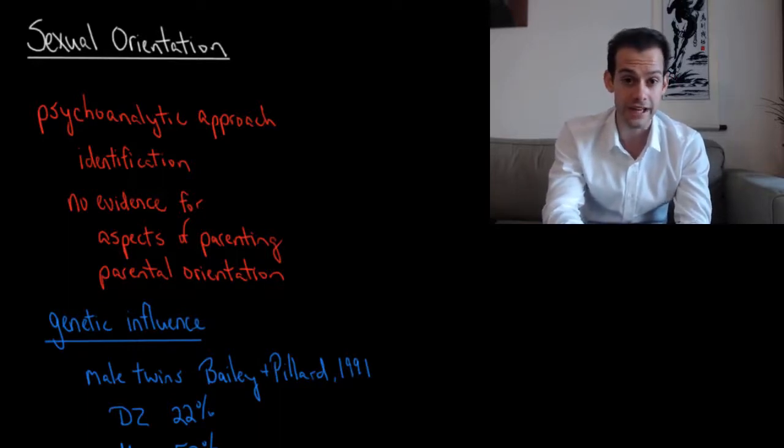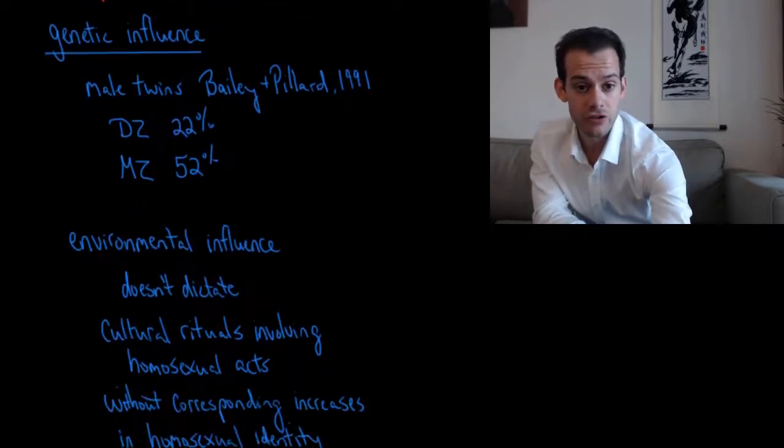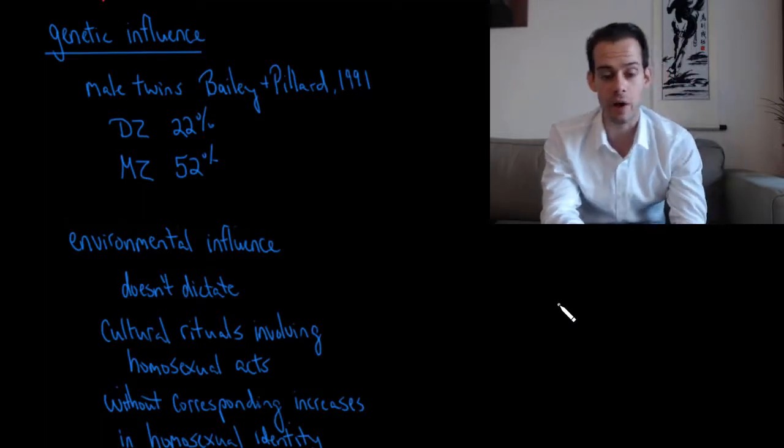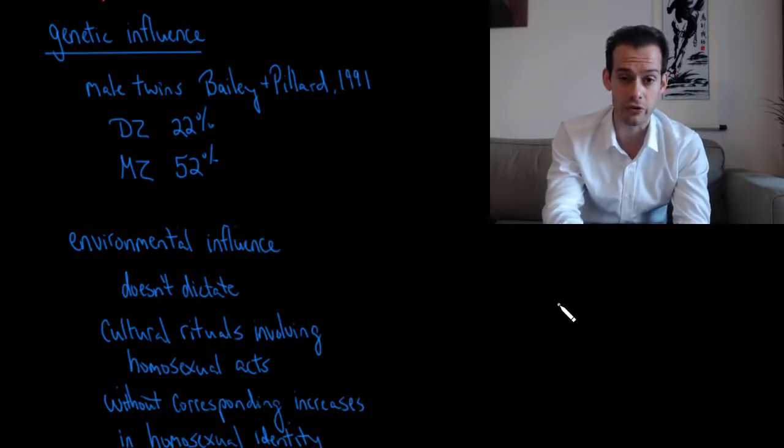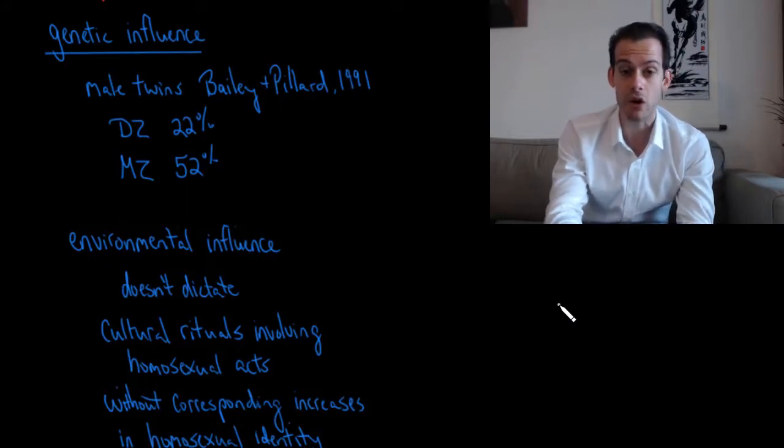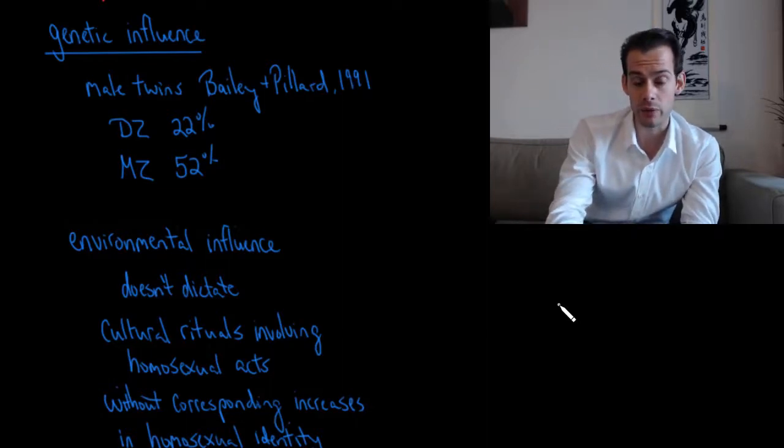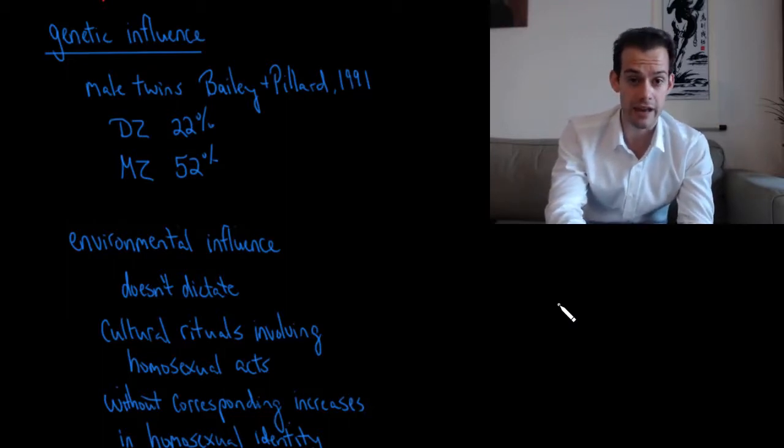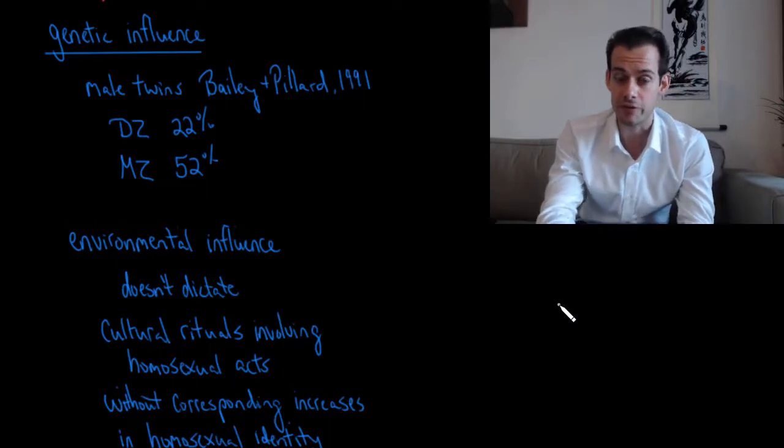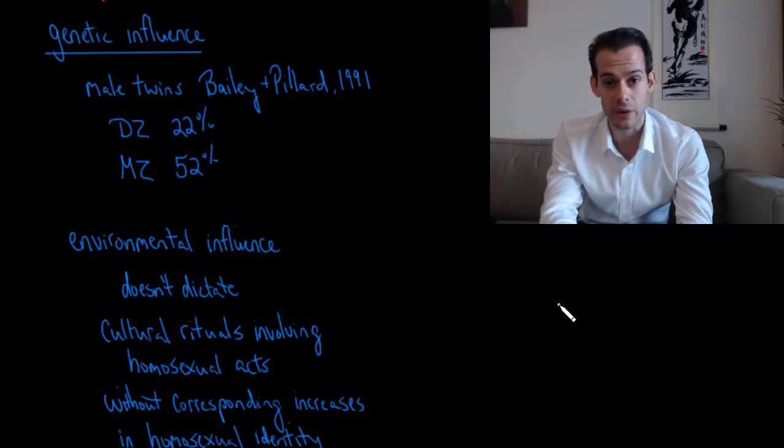We could also consider the role of genes on sexual orientation, and one way we could do this is by looking at twin studies. One such twin study by Bailey and Pillard in 1991 looked at sets of male twins—these were dizygotic twins and monozygotic twins. The idea was if one twin is homosexual, what are the odds the other twin is also homosexual? In the case of dizygotic twins, if one twin was gay then the other twin was gay about 22% of the time. But in monozygotic twins who share more genes, if one twin was gay the odds of the other also being gay were 52%. This suggests that genes are playing a role in sexual orientation because we see the more genes the twins are sharing, the more likely they are to share their sexual orientation.